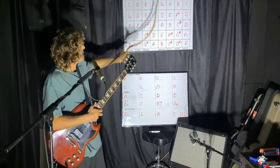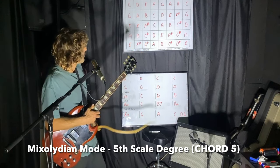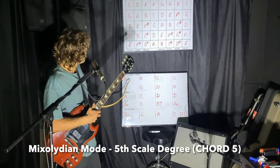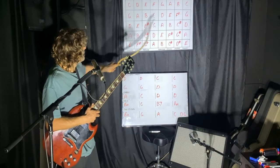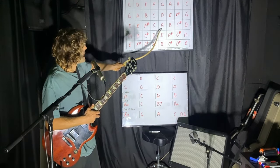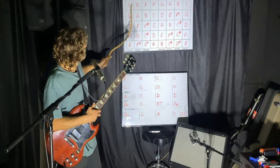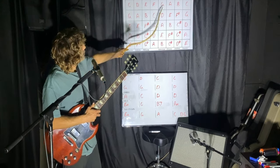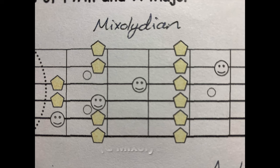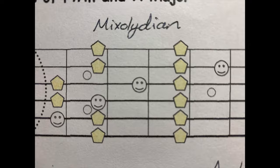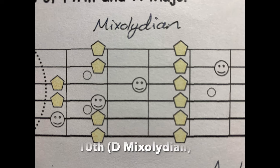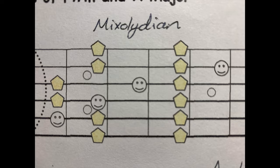This next time we're going to target the Mixolydian mode off the fifth degree. So if we've got a D chord, we come to number five — A — and we can play the A Mixolydian mode. For the C chord, we can play the G Mixolydian mode. For the G chord, we can play the D Mixolydian mode. And for the D chord, back to the A Mixolydian mode.